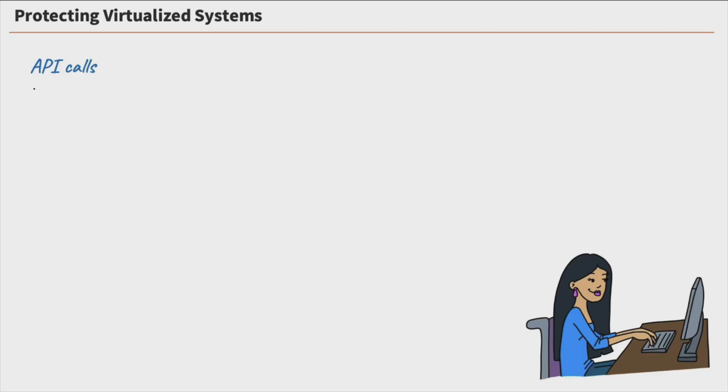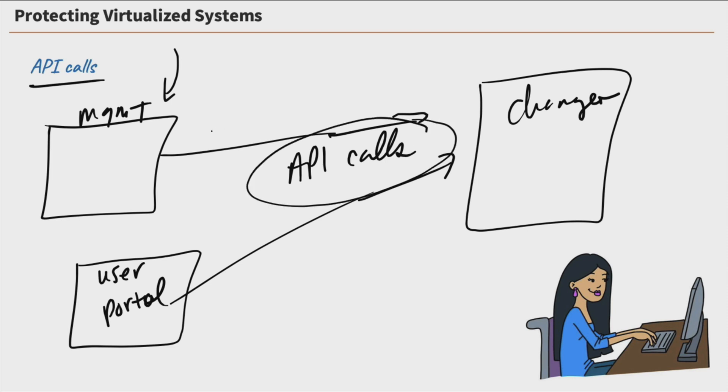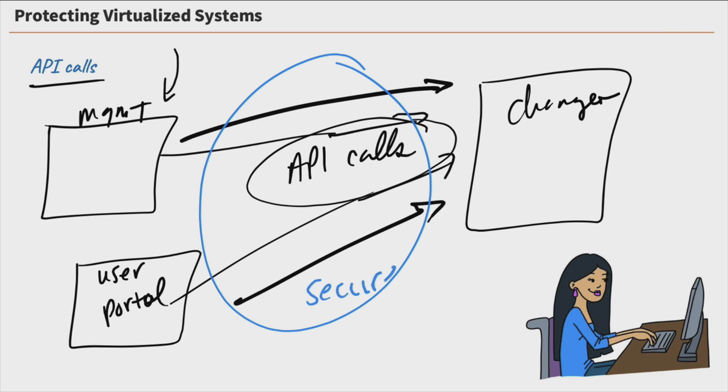Starting off with communications, you see API calls listed here. API calls are what the management plane and the systems use to make changes. We have our management interface over here, which could be that the admins are using our management plane, or it could be a user portal that users are logged into making changes in their accounts. Either way, these will use API calls to the actual systems for the changes to be made.